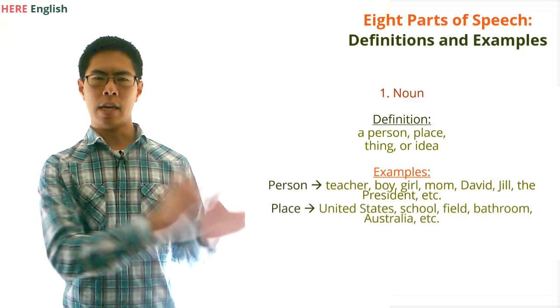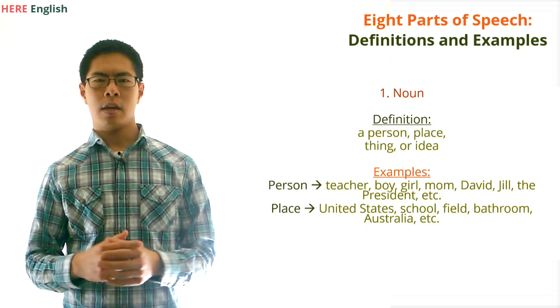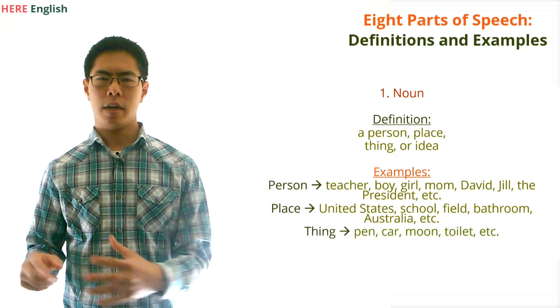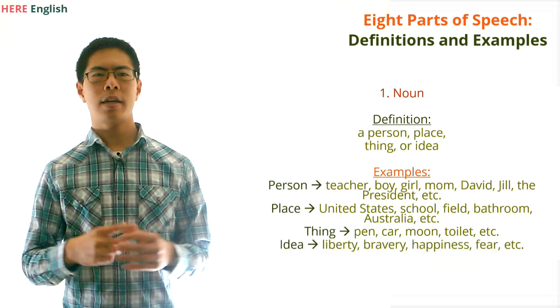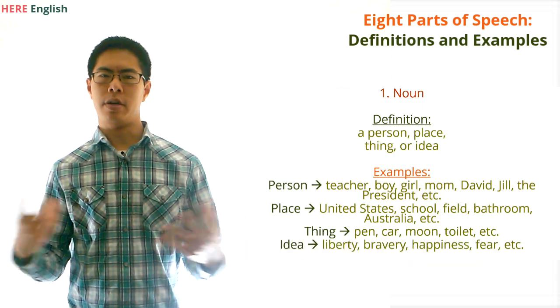A place might be the United States, a school, a field, a bathroom, Australia, etc. A thing might be a pen, a car, the moon, a toilet, etc. And an idea might be liberty, or bravery, or happiness, or fear, etc.